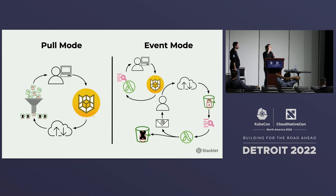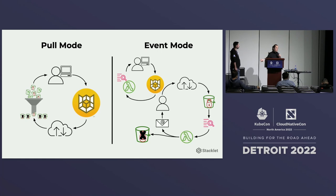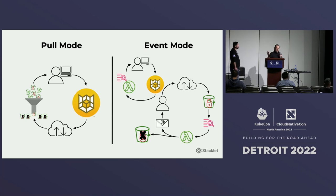I'll talk about the different modes. With Cloud Custodian, you have a pull mode, which means looking at the existing cloud infrastructure — querying against your AWS account, Azure subscription, or GCP project. Additionally, we have event modes, so you can react in a more dynamic way. For example, if a developer creates an S3 bucket that is public, you can detect that right away when it happens, change the permissions on that bucket to make it non-public, as well as notify the user, auto-tag it, or any other available actions.